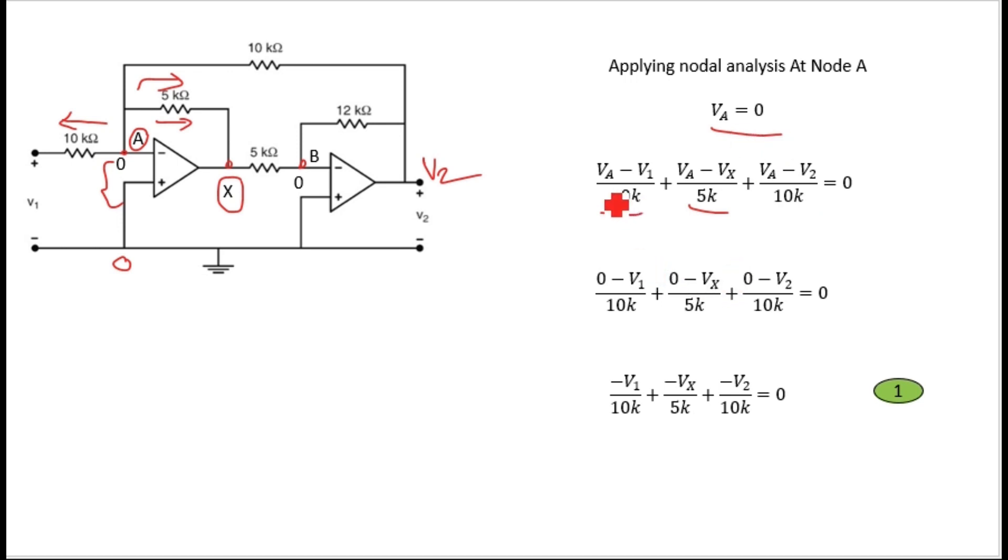Since due to virtual ground VA equals zero, I will replace VA with zero. So zero minus V1 divided by 10k, plus zero minus Vx divided by 5k, plus zero minus V2 divided by 10k. On solving we get minus V1 by 10k minus Vx by 5k minus V2 by 10k. This is your expression number one.